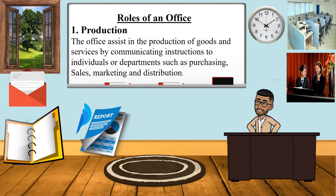We are going to be looking at the roles of an office. The first role is that the office has the role of production. Production in the office has to do with assisting in the production of goods and services by communicating instructions to individuals or departments such as purchasing, sales, and marketing — departments that are integral in the production process. If we look at the pictures on the left, we can see some of the documents that the office produces.